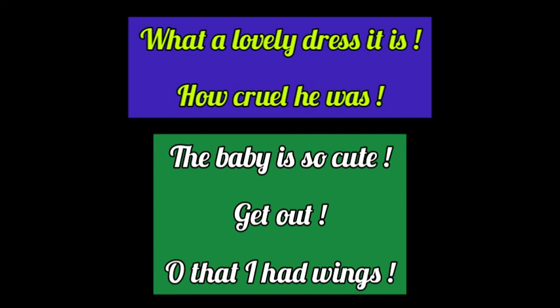Interestingly, sometimes an exclamatory sentence may have the structure of an assertive sentence or an imperative sentence. For instance, 'The baby is so cute' has an exclamation of admiration but has the structure of an assertive sentence. Similarly, 'Get out' has the structure of an imperative sentence but denotes an exclamation of anger, so it's an exclamatory sentence. The sentence 'Oh that I had wings' expresses a strong wish or desire, so it's also an exclamatory sentence.